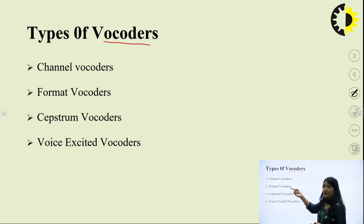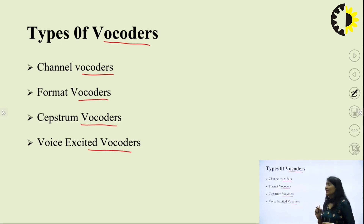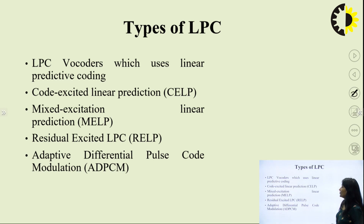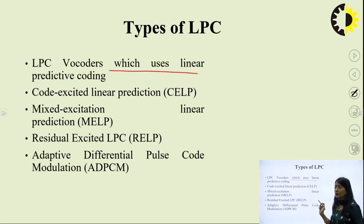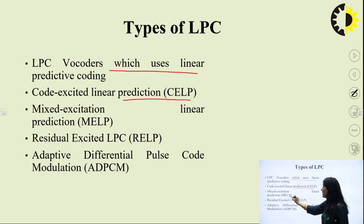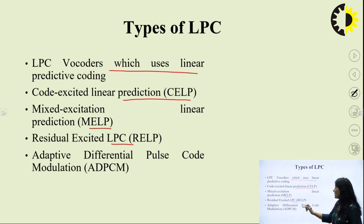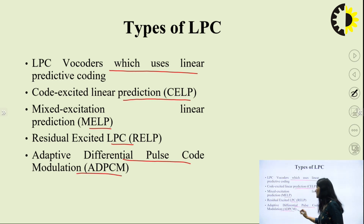Vocoders can further be classified as channel vocoder, formant vocoder, subband vocoder, and voice-excited vocoders. LPC is also one category of vocoder — LPC is linear predictive coding. LPC vocoders use linear predictive coding. Then we have code excitation linear predictive CELP, medium excitation MELP, residual excited RELP, and adaptive differential pulse code modulation ADPCM. These are the types of linear predictive coders.